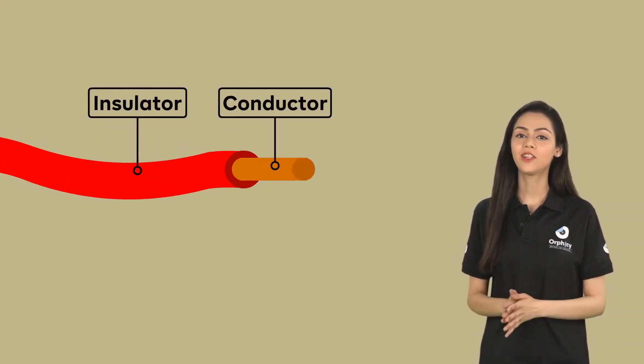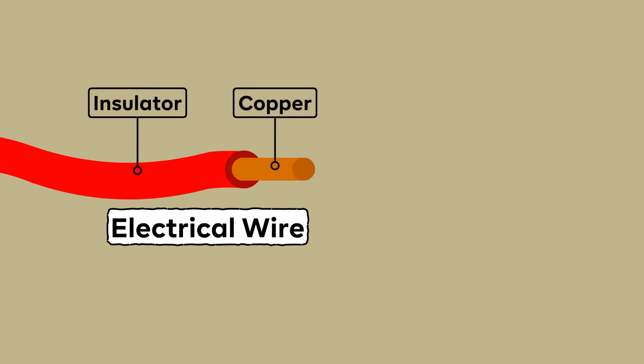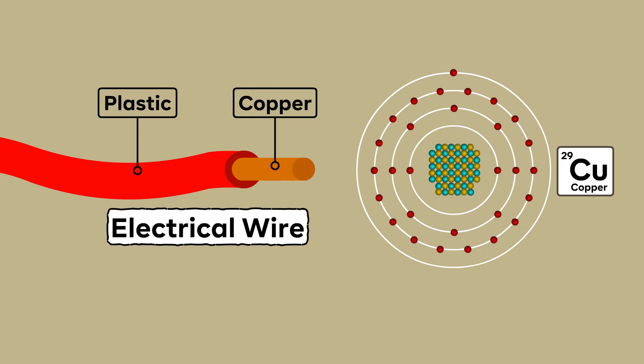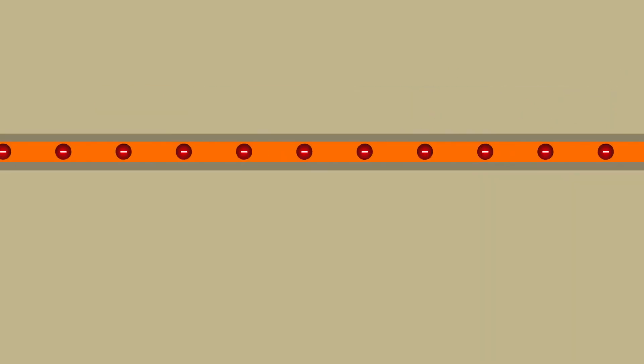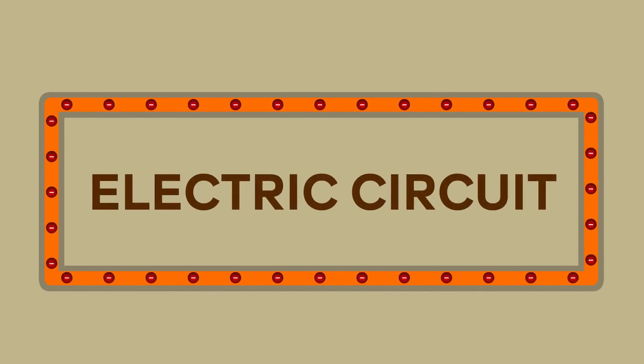A simple example where you can see a conductor and an insulator working together is an electrical wire. The electrical wire has a copper core and a rubber shell. The millions of atoms in this wire can easily exchange electrons, allowing us to make an electrical circuit.